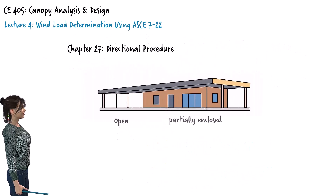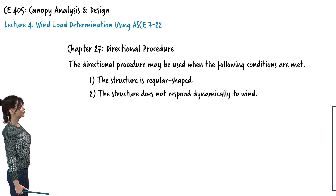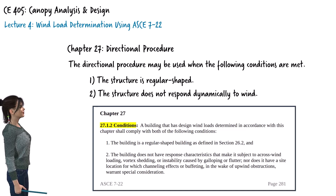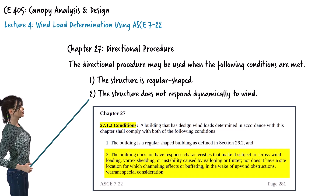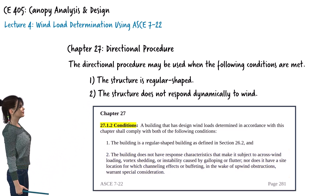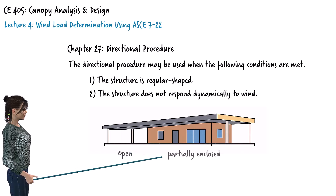To apply these equations, we'll follow the directional procedure described in Chapter 27. This method allows us to determine wind pressure on each surface of the structure based on the direction the wind is coming from. The directional procedure is appropriate for our bus terminal because it meets the two conditions listed in Section 27.1.2: first, the structure has a regular shape — a straightforward rectangular layout; and second, it is rigid and low-rise, meaning it doesn't respond dynamically to wind and is not subject to crosswind effects.